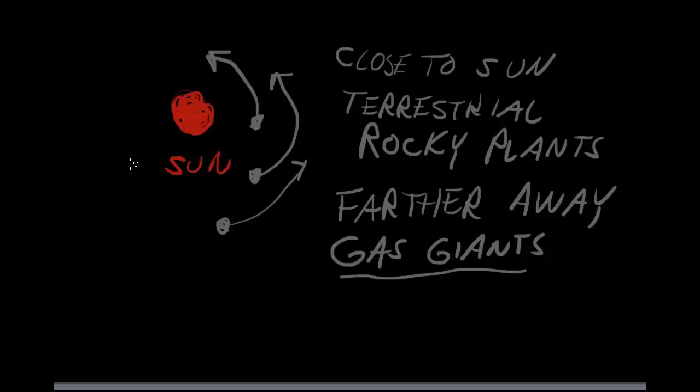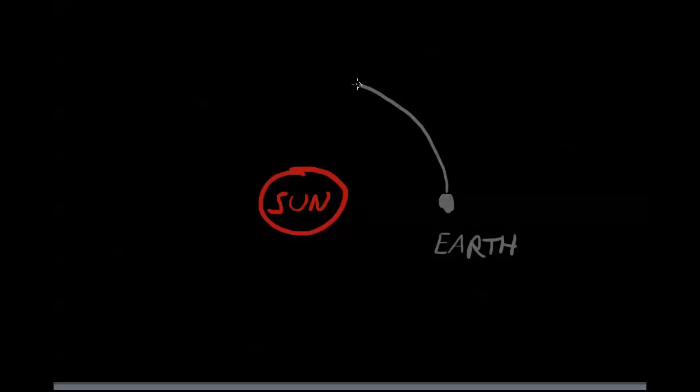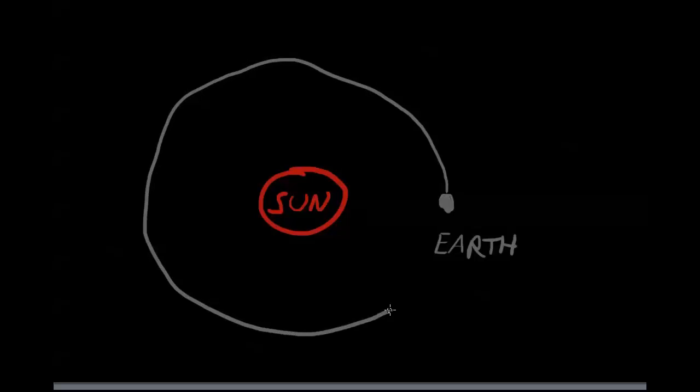One thing we also want to look at is how a planet stays in orbit. Let's look at the sun — that's the largest mass of material in our solar system. Earth revolves around the sun once every one year, 365 days. The Earth spins around the sun, and it's not quite circular — it's elliptical.